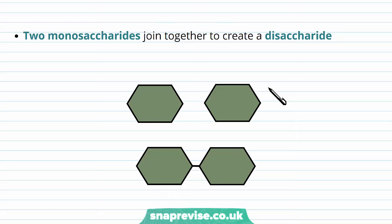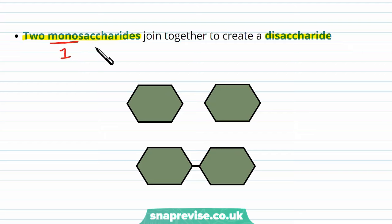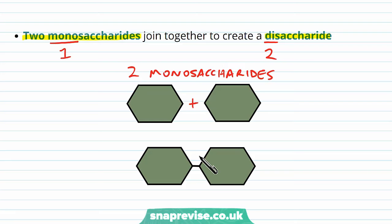If we take two monosaccharides and form a bond between them, we then form a disaccharide. The only thing that changes is the prefix — from 'mono,' meaning one, to 'di,' meaning two. So here we have two individual monosaccharides, and by forming a bond between them we have two monomers joined together, which is now known as a disaccharide.